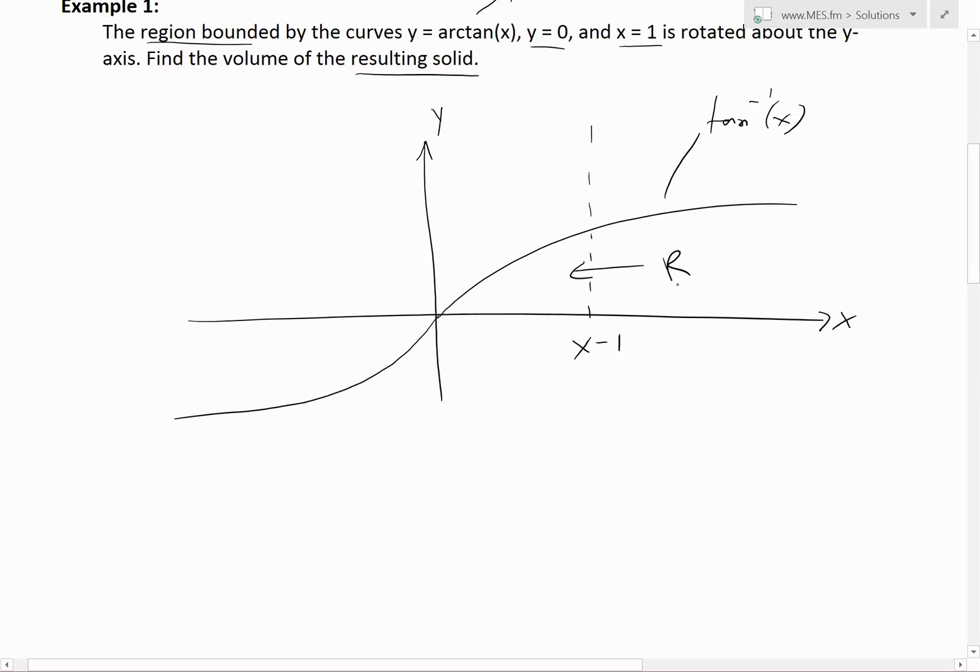This is the region R. Now we need to solve for the volume. Recall cylindrical shells: if we draw a vertical shell like this and assume it has an infinitely small thickness dx, then at the center we'll call this distance x.